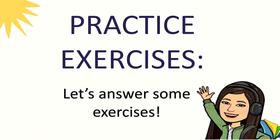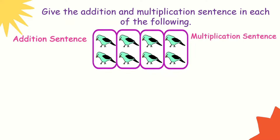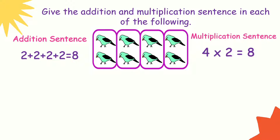Let's practice. Give the addition and multiplication sentence for each of the following. For this illustration, how many birds are there in each group? The addition sentence is 2 plus 2 plus 2 plus 2 equals 8. The multiplication sentence is 4 times 2 equals 8 — 4 groups with 2 birds each.